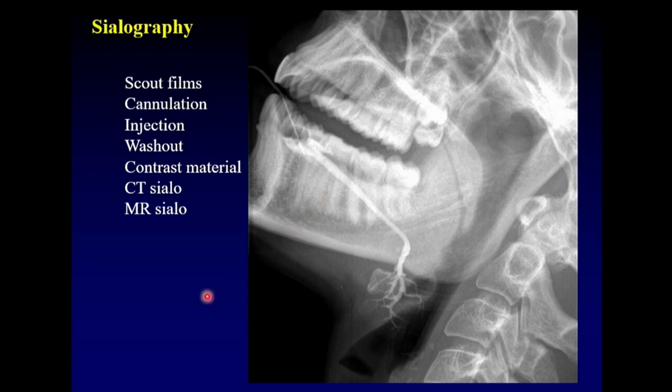Then we give a sialagog, usually lemon juice, to drain all that contrast back out and make sure that none of it is entrapped within the ducts.